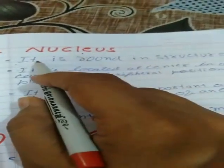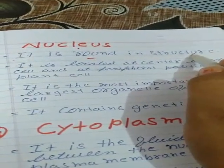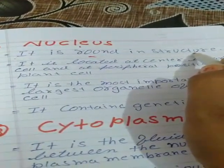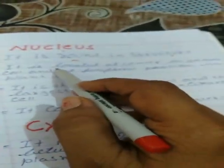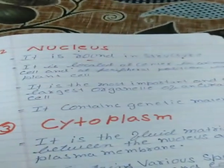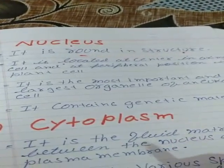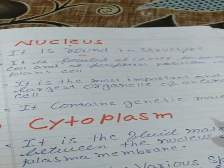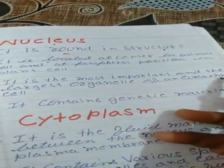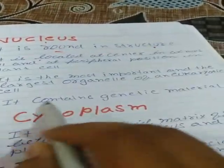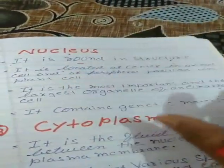The next basic component is the nucleus. The nucleus is round in structure and is also called the brain of the cell because all basic functions are controlled from the nucleus. In the case of an animal cell, it is located at the central position, and in the case of a plant cell, it is located at the peripheral position, near the plasma membrane. It is the most important and the largest organelle of the eukaryotic cell and consists of genetic material.